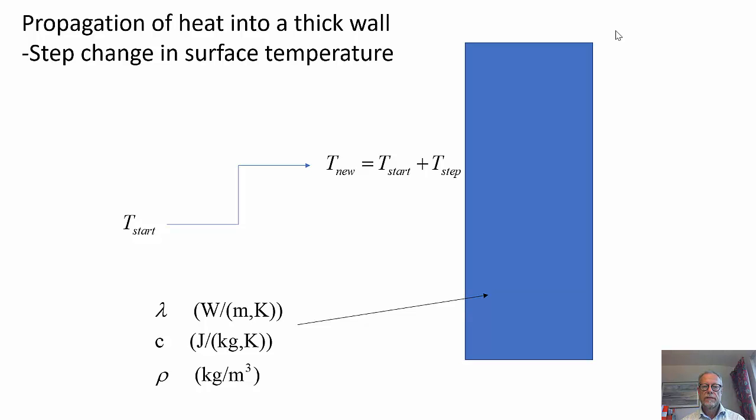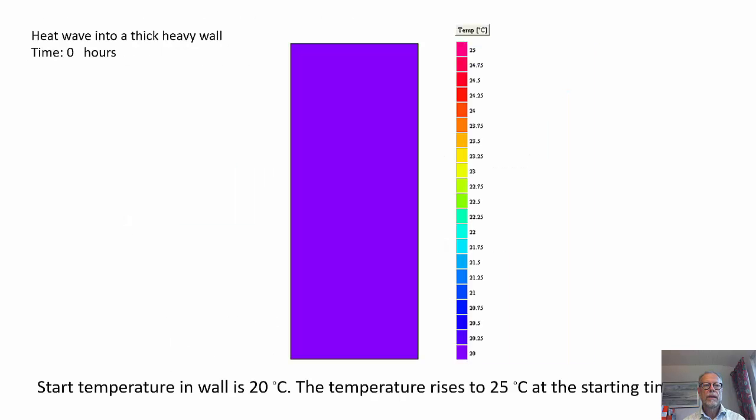The thermal properties of the solid are important. We have the thermal conductivity, λ. The heat capacity and the density are important as well. Here we see in animation how the temperature and the heat is moving into the object.